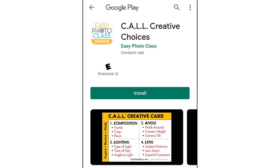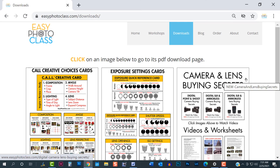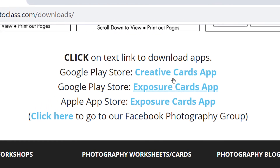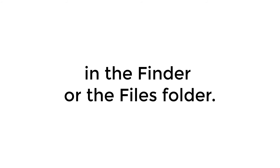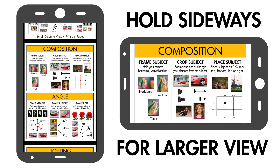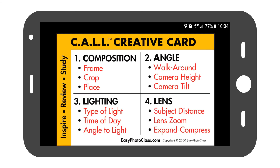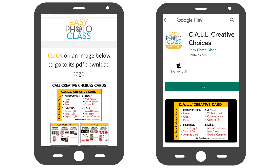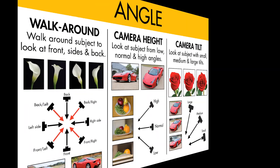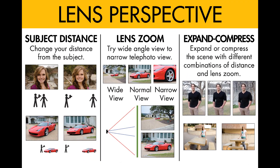The CALL Creative Choices quick reference cards are also available as an app on the Google Play Store — if you scroll down our website's download page, you'll find the link to the app. With iPhones, you can find the PDF by searching for PDFs in the Finder or the Files folder. Holding your cell phone or tablet sideways will give you a larger image, and you can spread your thumb and index finger on the screen to make it even larger. Links to the downloads section at easyphotoclass.com and the Google Play Store are in the information below this video. I hope you enjoy using the CALL Creative Cards to learn how to see creatively and take amazing photographs.